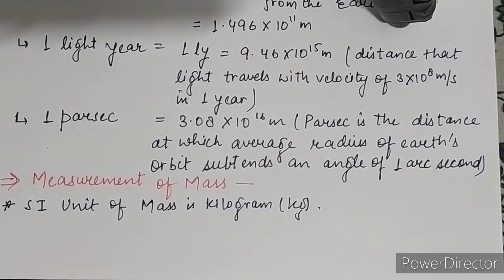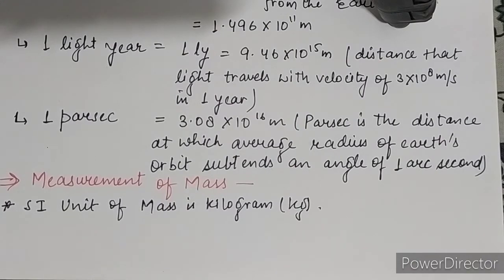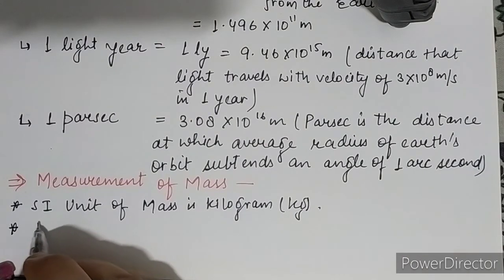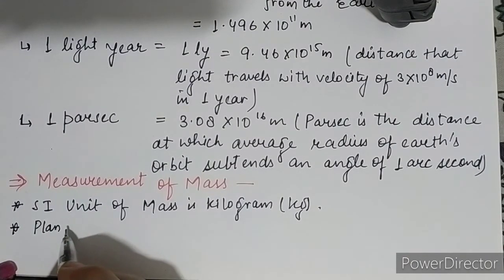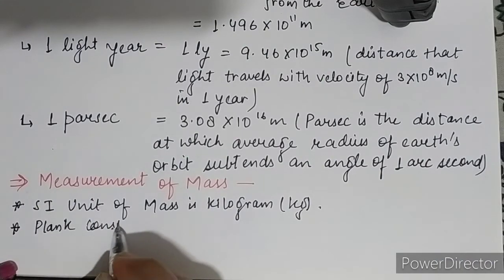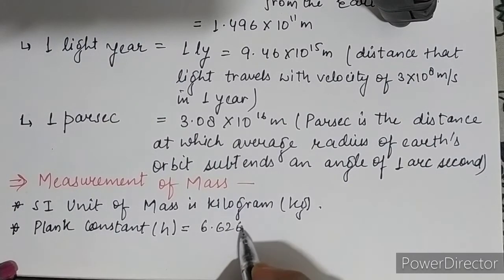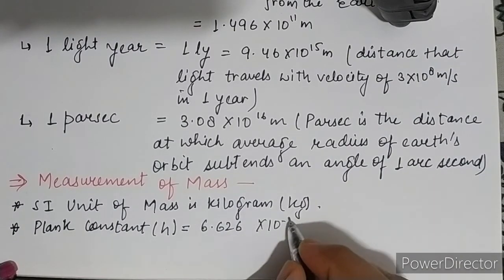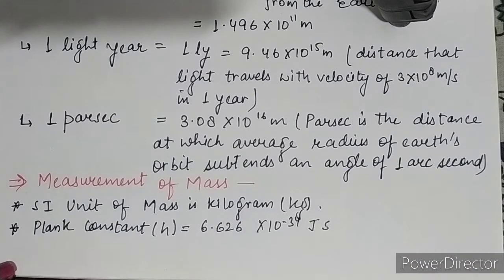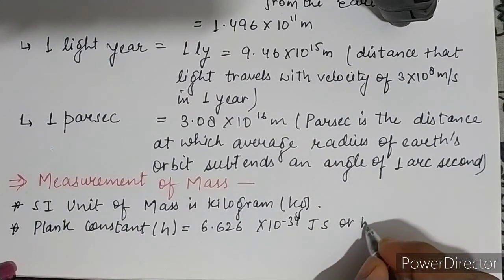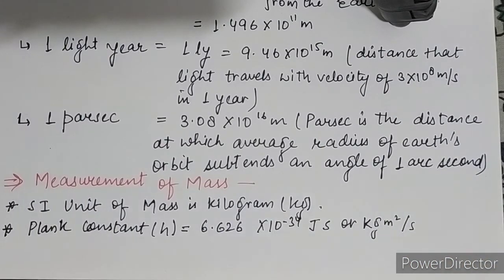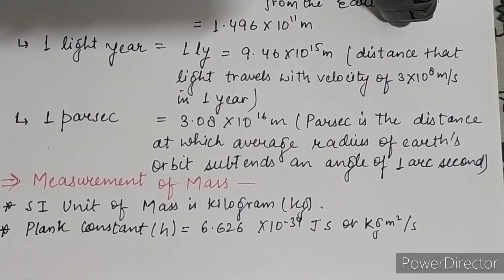The kilogram is defined using a fixed numerical value of the Planck constant. The Planck constant, named after scientist Planck, is denoted by h and its value is 6.626 × 10 to the power minus 34 joule-second, which can also be written as kilogram meter squared per second.